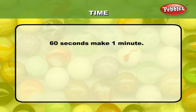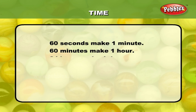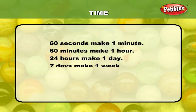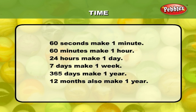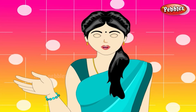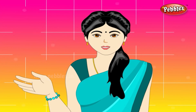60 seconds make one minute. 60 minutes make one hour. 24 hours make one day. Seven days make one week. 365 days make one year. 12 months also make one year. Let us learn with the help of some examples.